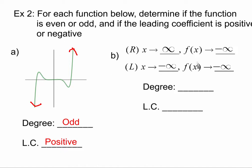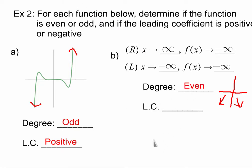For part b, I'm given the end behavior rather than a picture, but I can sketch it. On the right, as x goes to infinity, f of x goes to negative infinity, which is down. On the left, as x goes to negative infinity, f of x also goes to negative infinity, so that's also down. Both arrows point down, so the degree has to be even. And since both point down, the leading coefficient has to be negative.